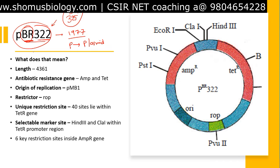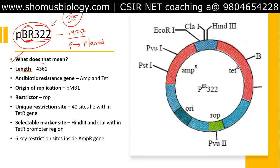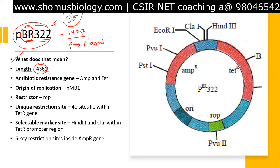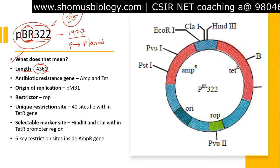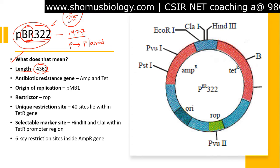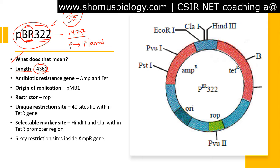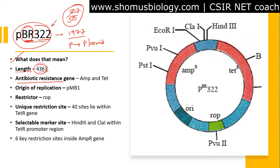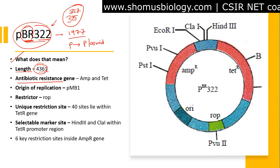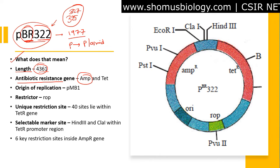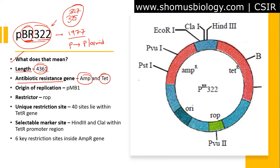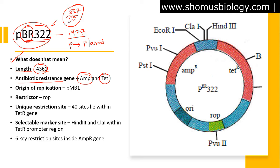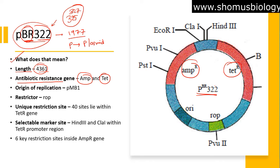The length of PBR322 is 4361 base pairs. As a cloning vector it must carry a selectable marker, which in this case is an antibiotic resistance gene. The antibiotic resistance genes present in PBR322 are the ampicillin resistance marker and the tetracycline resistance gene, as you can see in this picture of the circular plasmid.